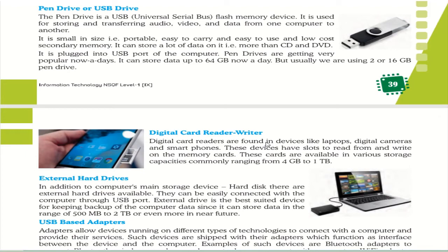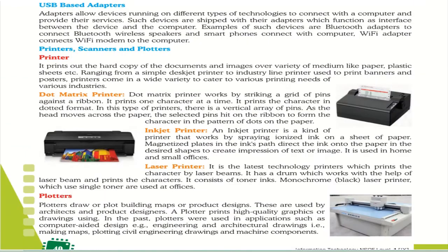The external hard disk is best suited for keeping backup of computer data, since it can store data in the range of 500 MB to 2 TB or even more. If your system's hard disk is full, small memory devices can store up to 2 GB, 8 GB, 16 GB, or 32 GB — but to store more than that, it is better to have an external hard disk because it can carry data in large quantities.